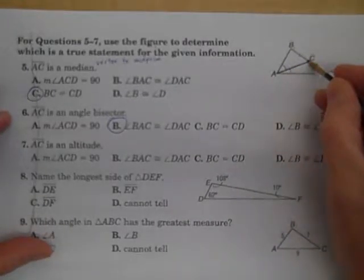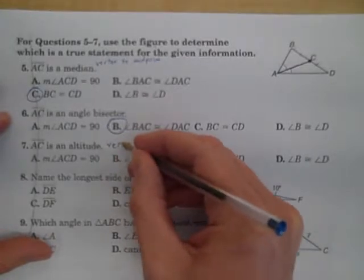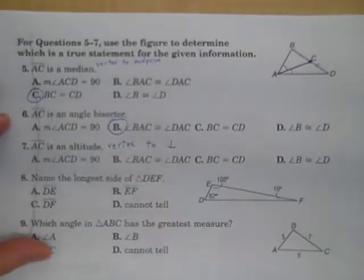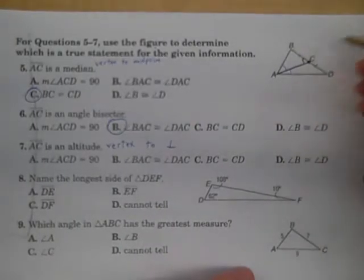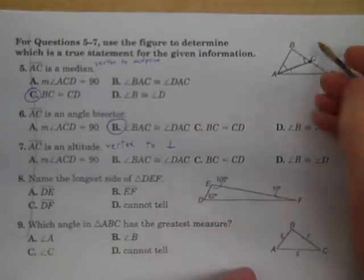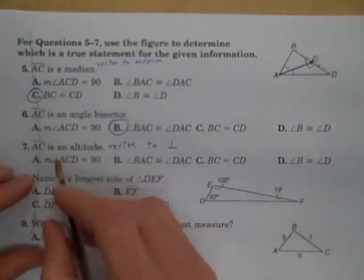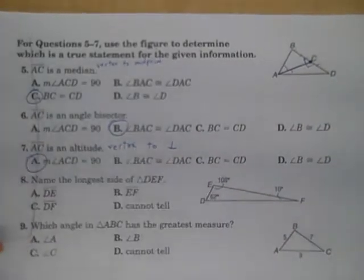If AC is an altitude, altitude is vertex to perpendicular. If AC is an altitude, then we are seeing a 90 degree angle. Even though it doesn't look like it's a 90 degree angle, that's supposed to be a 90 degree angle. So the measure of angle ACD would have to be 90 if AC is an altitude.